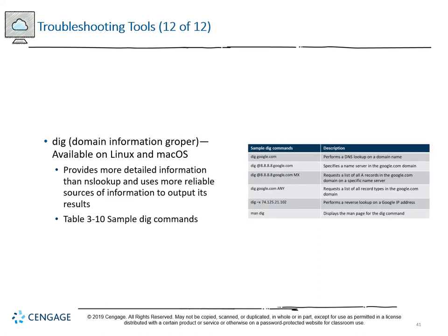DIG — Domain Information Groper — is more detailed than nslookup with more extensive commands. 'dig google.com' does a standard DNS lookup. 'dig @8.8.8.8 google.com' specifies the name server to query. 'dig @8.8.8.8 google.com mx' pulls all mail exchanger records. You can similarly query CNAME, A, or AAAA records. 'dig google.com any' pulls all record types. 'dig -x' does a reverse lookup, and 'man dig' gives the manual pages.